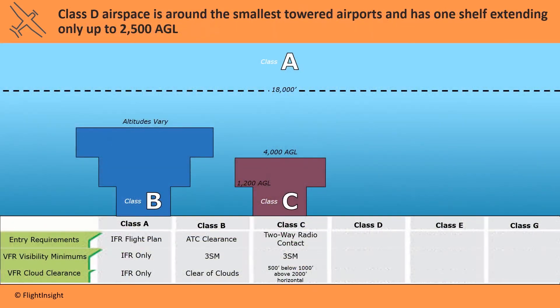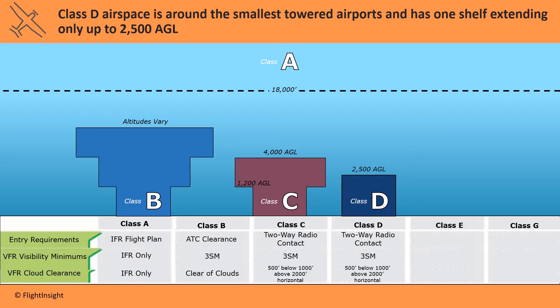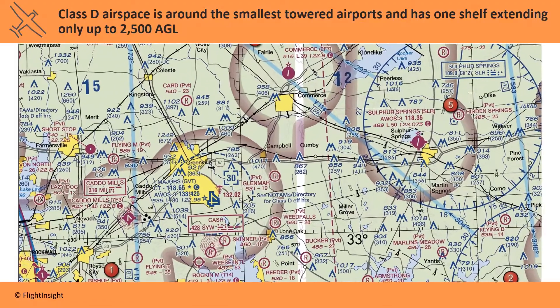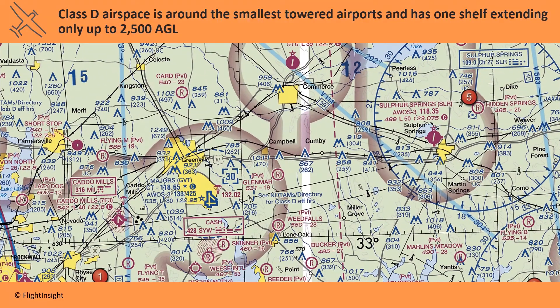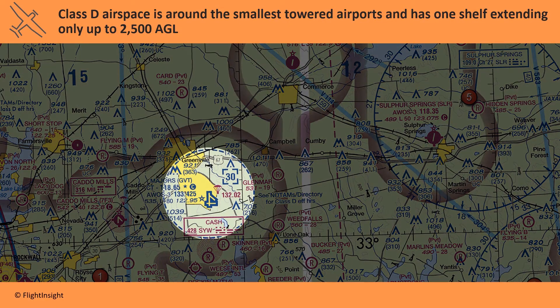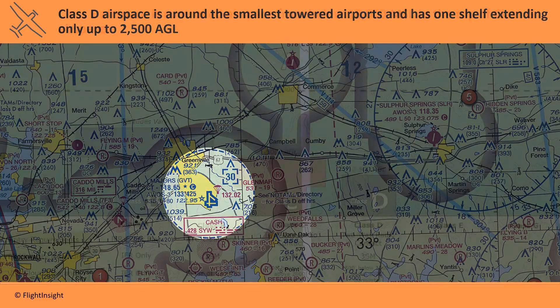Class D airspace is around the smallest towered airports and only goes up to 2,500 AGL. There's only one tier here — it's a pretty sad one compared to the other two, so we'll call it a divorce cake: D for divorce, there's only enough cake for one. Same entry requirements and weather minimums as Class C. The blue segmented circle around Major's Airport here shows Class D airspace. The 30 symbol in brackets means that the airspace goes up to 3,000 MSL, which is about 2,500 feet above the ground.